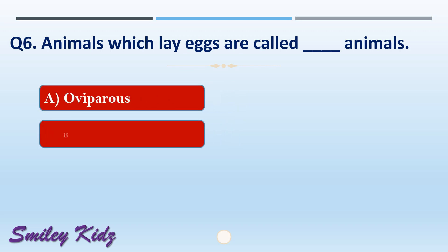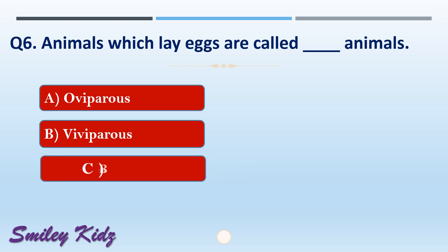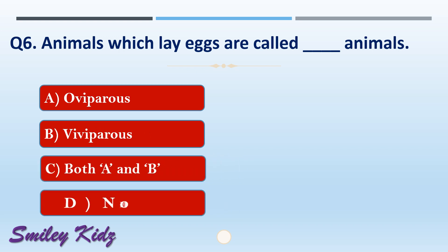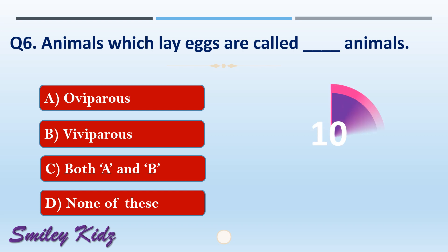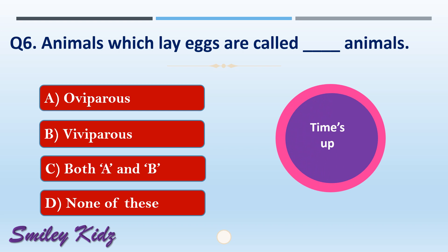Question number six: animals which lay eggs are called dash animals. The options are: A) oviparous, B) viviparous, C) both A and B, or D) none of these. The right answer is option A, oviparous. Animals which lay eggs are called oviparous animals.